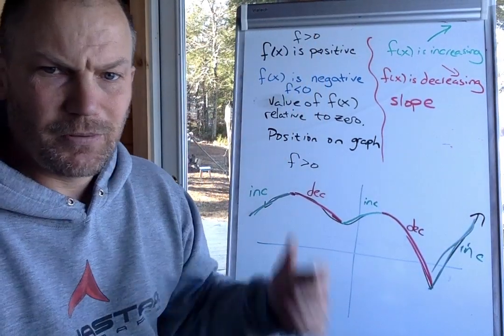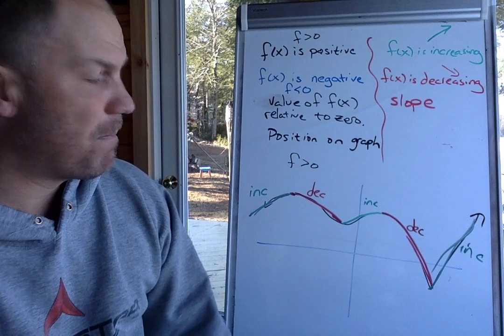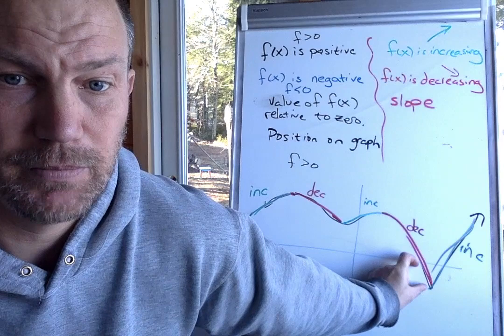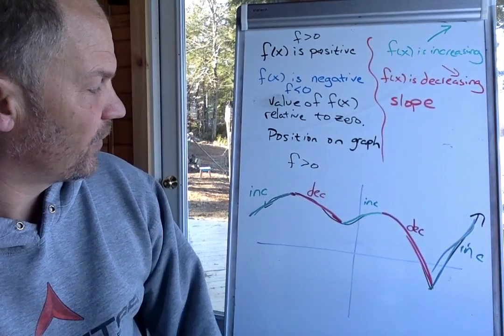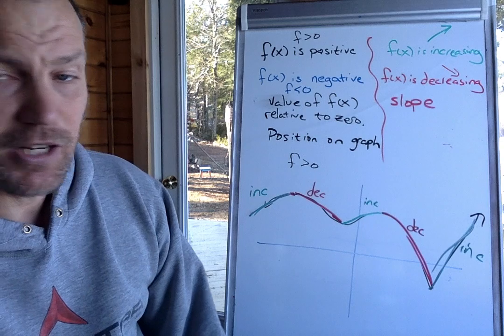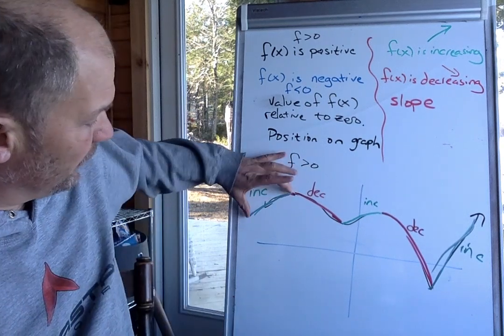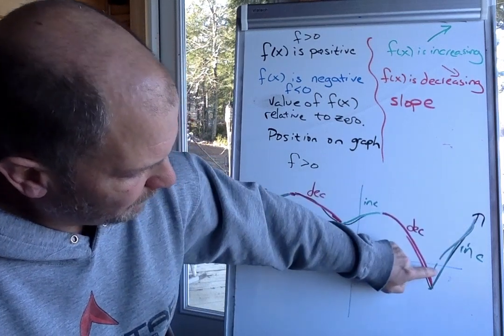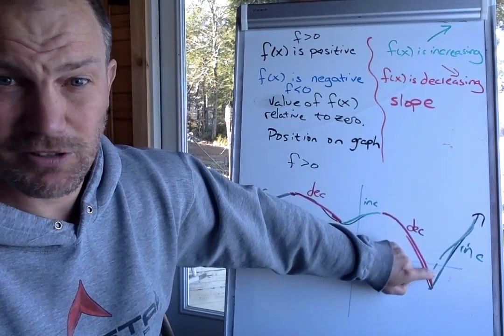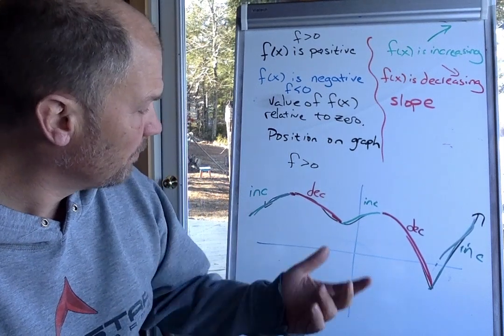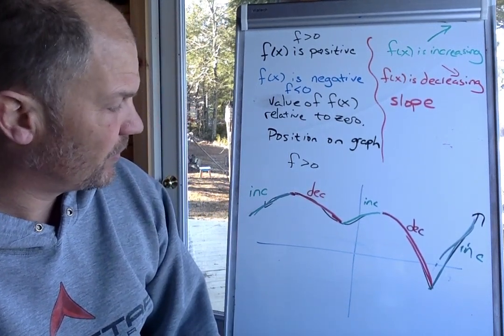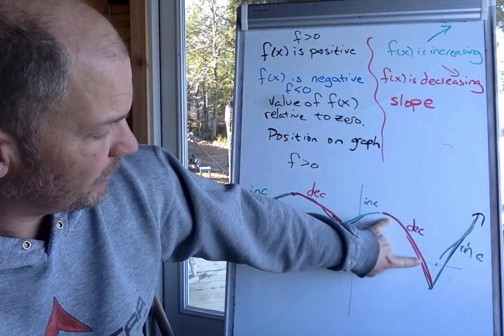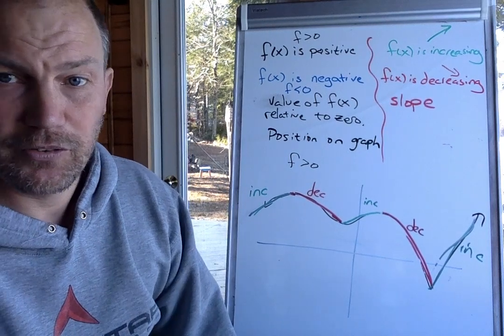So I could ask you a question and say, where is this function both decreasing and negative? And you would say, oh, right there, from here to here. Where is this function increasing and greater than zero? We need to look at here, this region, and this region over here, but not that because it's increasing and less than zero right here. Where is this function decreasing and greater than zero? Here and from here to here. Again, not here because it's less than zero.